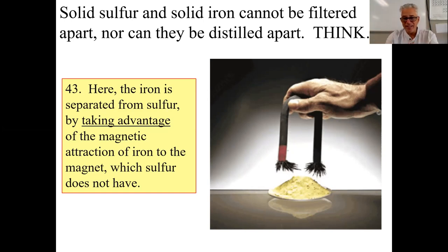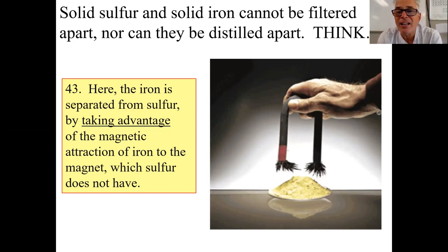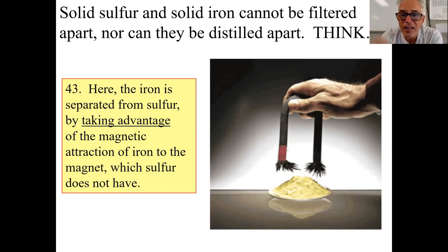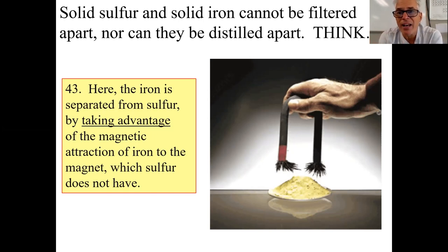When the magnet gets full, the iron is all over it and there are still some black specks in the bowl — not all iron comes out the first time. Once you clean the magnet and go back with a clean one, you'll pick up the rest. It may take three or four trips, but you'll get all the iron out. Again, you take advantage of a difference in physical properties.